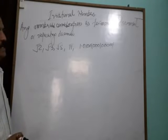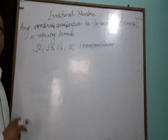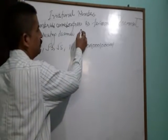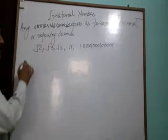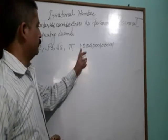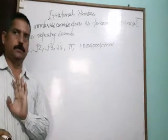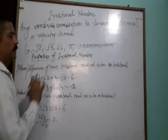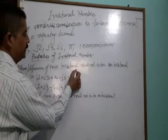I discussed the irrational numbers. Any numbers which cannot be expressed as terminating decimal or repeating decimal. Just an example: root 2, root 3, root 5, pi, 1.01001, 0.0010001, et cetera.